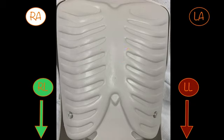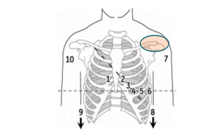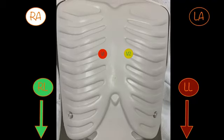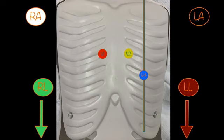Next, we'll place lead V4 — we'll come back to V3 shortly. Find the midclavicular line. The clavicle reaches from the sternum to the shoulder, and midway through that is the midclavicular line. In the fifth intercostal space on this line, place V4.